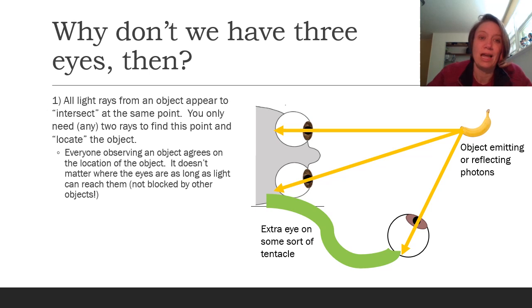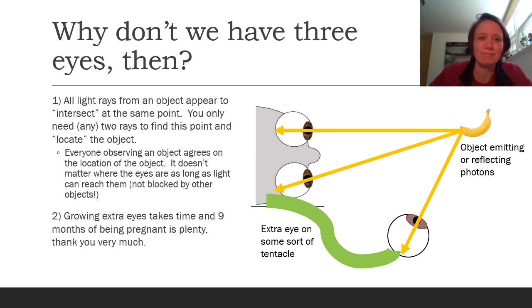It also means that everybody in the classroom who is observing an object, or everyone in the world that's observing an object, agrees on its location because no matter where your eyes are located those light rays appear to originate on the same spot. So as long as the light isn't being blocked by another object, everybody should agree on where the object is. Another reason we don't have three eyes, speaking from experience, is because nine months is plenty of pregnancy and growing extra eyes would probably take extra investments in our offspring, so two eyes is plenty.